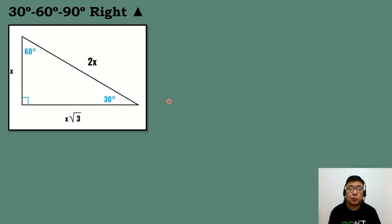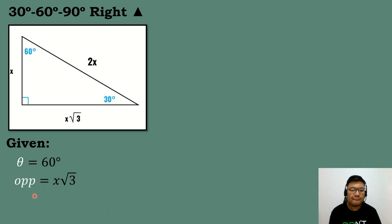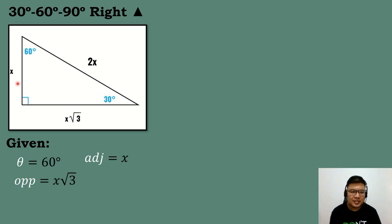The hypotenuse is twice as long as the shortest leg, and the longer leg is square root of 3 times the shorter leg. Now we are ready to evaluate the trigonometric functions of these special angles. The given angle will be 60 degrees. The opposite of 60 degrees is x square root of 3, the adjacent side is equal to x, and the hypotenuse is equal to 2x.